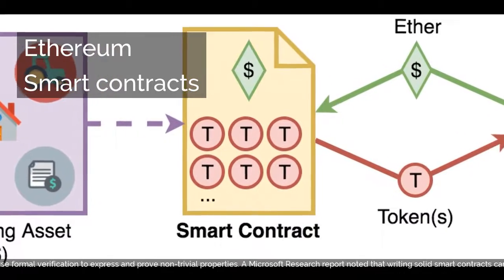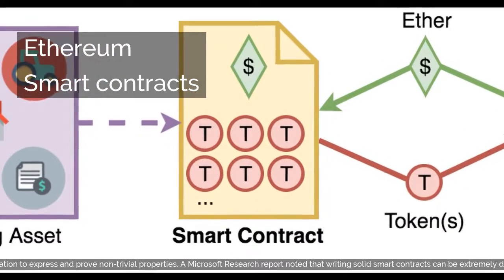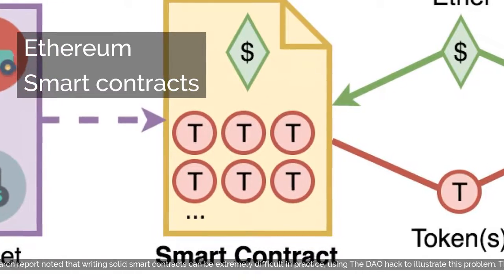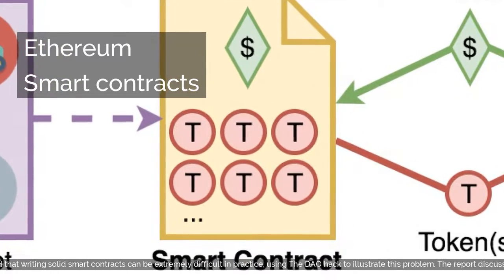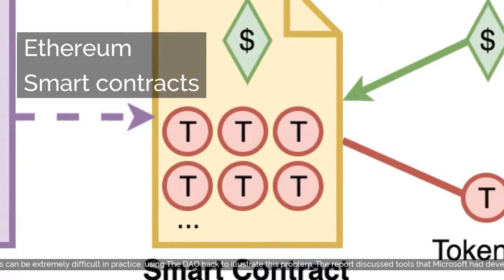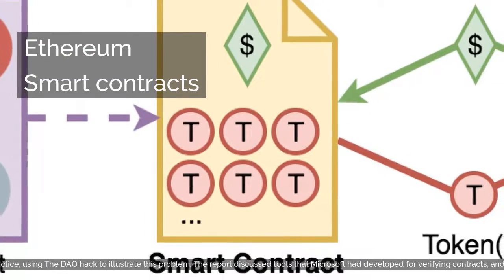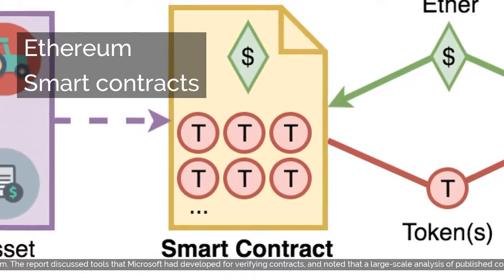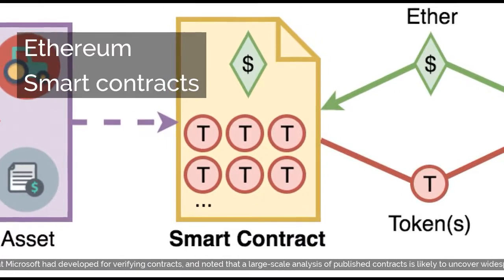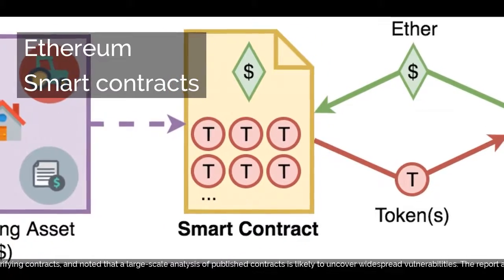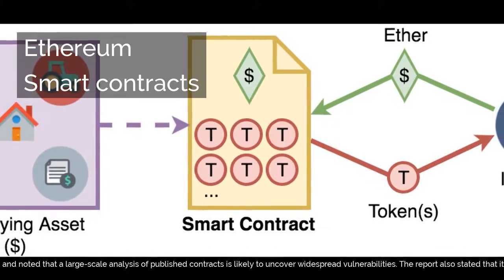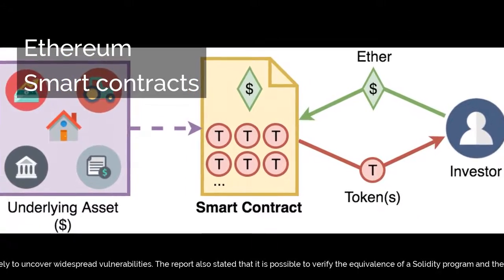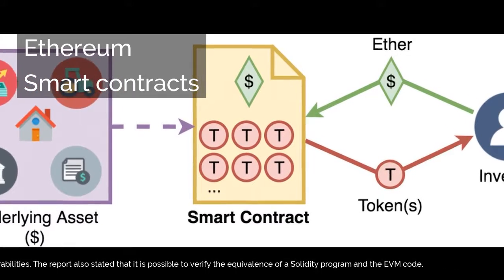There is ongoing research on how to use formal verification to express and prove non-trivial properties. A Microsoft research report noted that writing solid smart contracts can be extremely difficult in practice, using the DAO hack to illustrate this problem. The report discussed tools that Microsoft had developed for verifying contracts, and noted that a large-scale analysis of published contracts is likely to uncover widespread vulnerabilities. The report also stated that it is possible to verify the equivalence of a Solidity program in the EVM code.